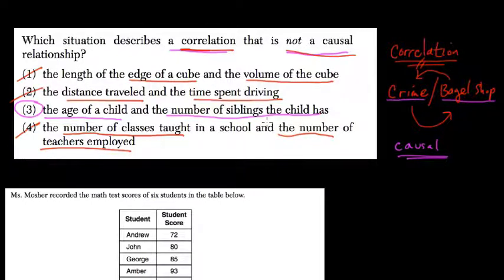It doesn't mean that I would necessarily have lots and lots of siblings or more siblings than someone who's even 12 years old, who might have five or six brothers or sisters, where I only have one sister. So there might not be a causal relationship here. In other words, the older you get doesn't mean automatically the more brothers and sisters you have.